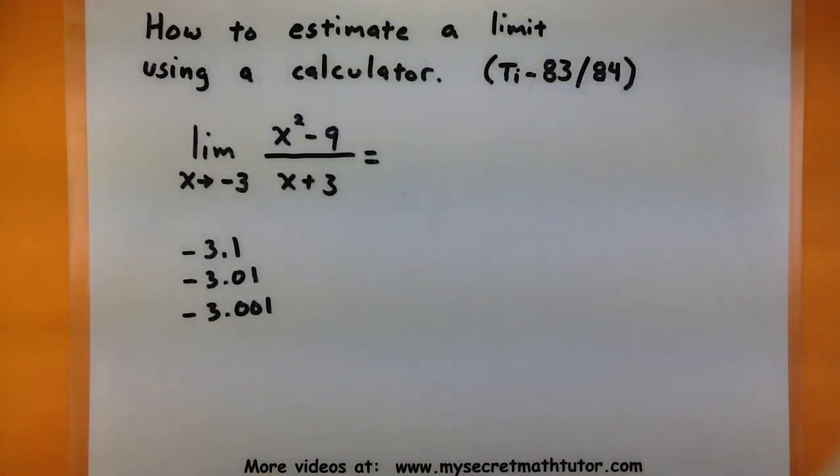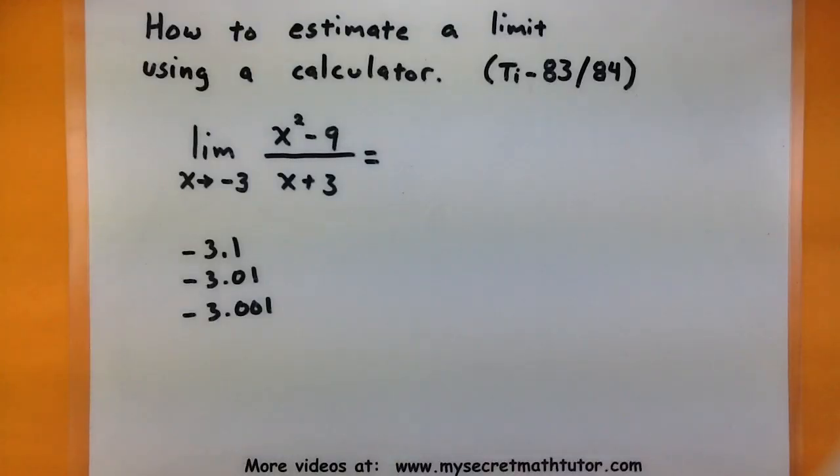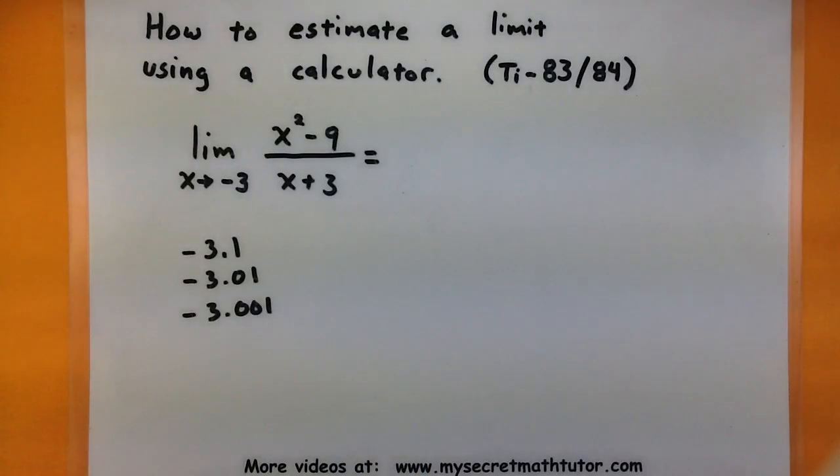To see why I'm choosing these values, note how all of these are on the left side of negative 3, and they're getting closer and closer to negative 3. So I'm looking at what those values are doing as they get closer so that I can examine the y values of the function.